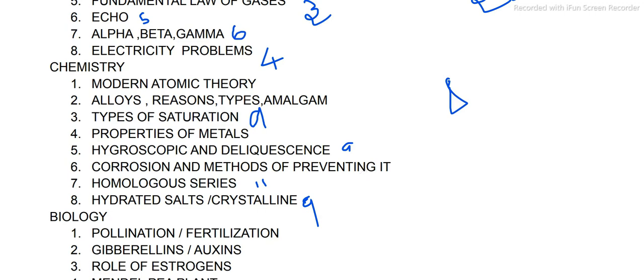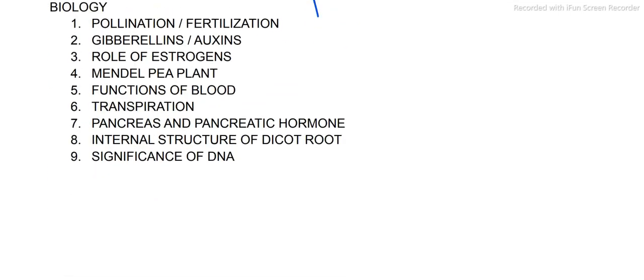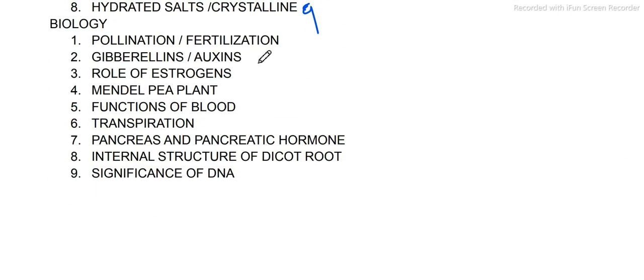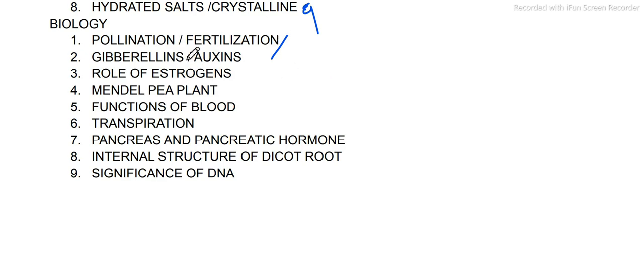Biology: Pollination and fertilization. The importance of pollination. Compulsory questions include: advantages and disadvantages of self-pollination, cross-pollination. Fertilization — the structure of ovule is another question.